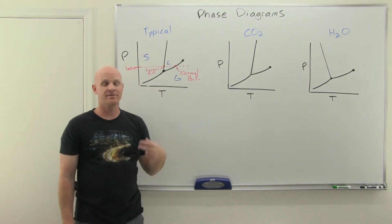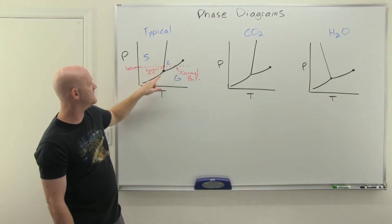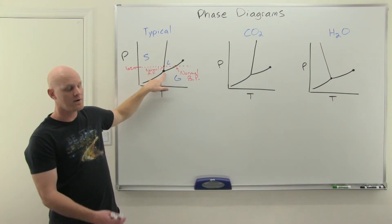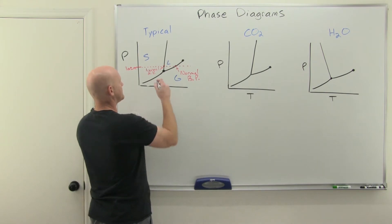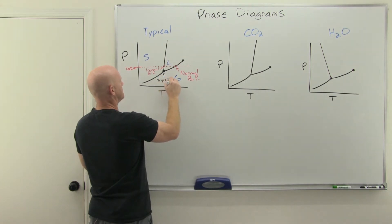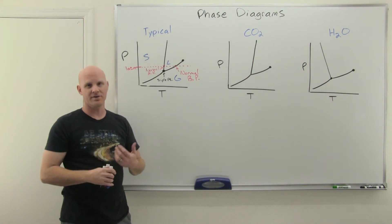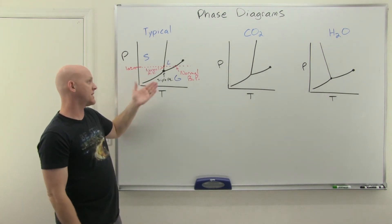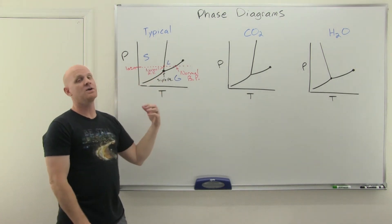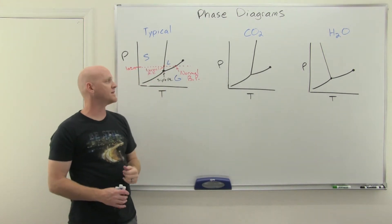If you lie anywhere on a line, you're going to have two phases in equilibrium together, except for the one point where all three lines meet. At that one point and that one point alone, solid, liquid, and gas are all in equilibrium together. This gets a special name — it's called the triple point. You have to be at the exact pressure and exact temperature unique to that substance to have the triple point occur.